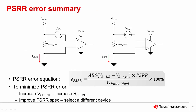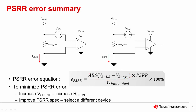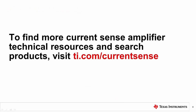Let's take a minute to summarize what we learned in this video. First, Power Supply Rejection Ratio is a measure of the change in the device's offset voltage induced by change in the amplifier's supply voltage. Secondly, Power Supply Rejection error is calculated with respect to the ideal shunt voltage. Thirdly, Power Supply Rejection error is proportional to supply voltage delta. And lastly, to reduce PSRR error, you can either increase VShunt by increasing RShunt, or improve the PSRR spec by selecting a different device. That concludes this video. Thank you for watching. Please try the quiz to check your understanding of the content. For more information and videos on Current Sense Amplifiers, please visit ti.com/CurrentSense.